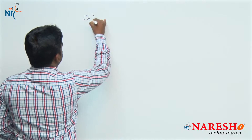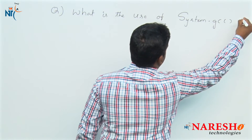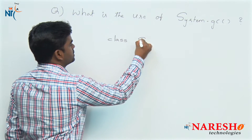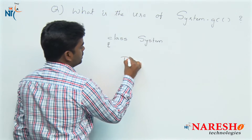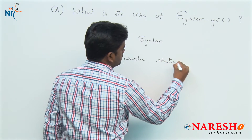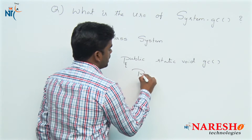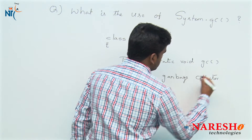Welcome to Naresh Technologies. In this session we are going to discuss one FAQ in garbage collection: what is the use of the System class GC method? System class is predefined and available in the java.lang package. In the System class there is one method — it is a public static method that does not return anything, and its name is GC. That GC method simply runs the garbage collector thread.